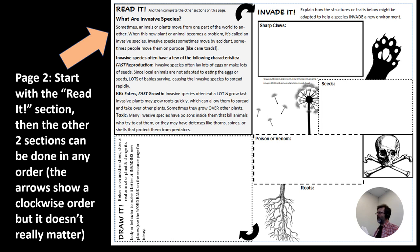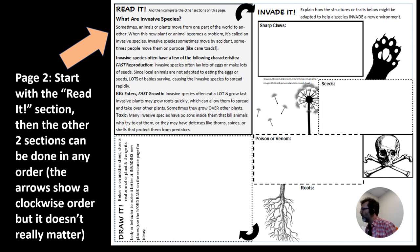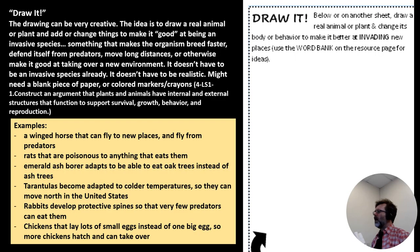The second page of Part One is called Read It. Youth are asked to read the gray-shaded area first, which has facts about invasive species, and then do the other two sections in any order they want. The clockwise arrows are a suggestion but it doesn't really matter what order things are done on this part of the lesson plan.